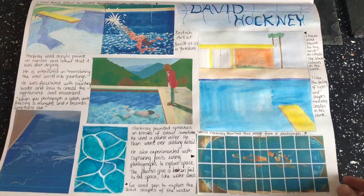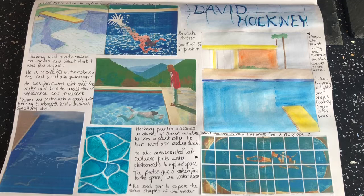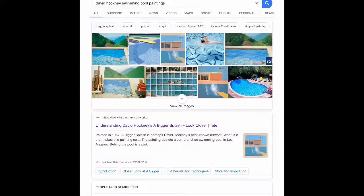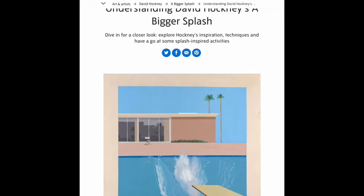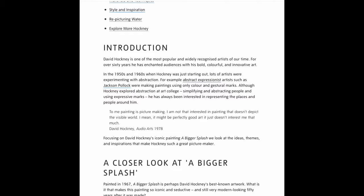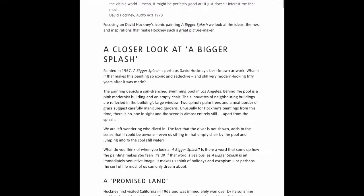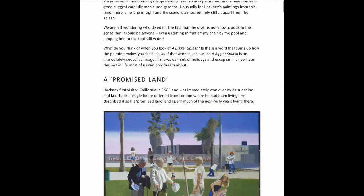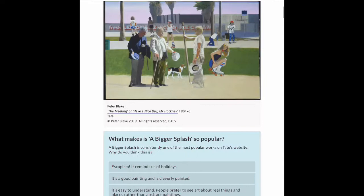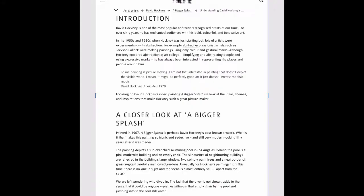One of the first things we need to make sure of when doing artist research is that we are using a credible source. When googling David Hockney swimming pools, straight away the Tate gallery comes up, which has a huge amount of information on this particular area of the artist's work. We know it's credible, so we can read through that and choose the bits that are important for our research.